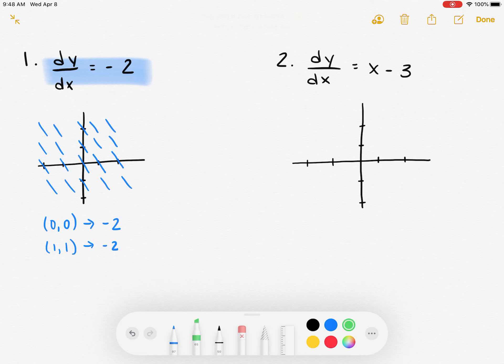Now if I'm going to try and figure out where the second one is, where I have dy/dx equals x minus 3, I'm going to do the same thing. I'm going to start with (0,0). I'm going to plug it into my equation of x minus 3. My x value in this situation is 0, so I'm going to have 0 minus 3, which gives me a slope of negative 3.